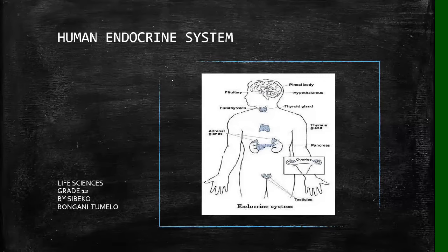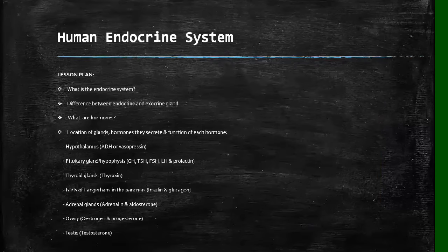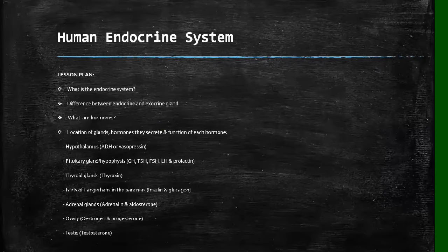The topic we're going to discuss is the human endocrine system. Looking at our lesson plan and objectives, we're going to look at the definition of the endocrine system, the differences between the endocrine and exocrine glands, what are hormones, the location of glands, the hormones they secrete, and the function of each hormone.